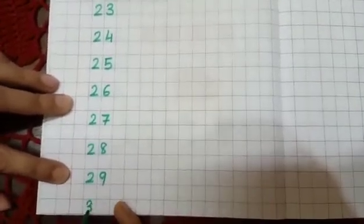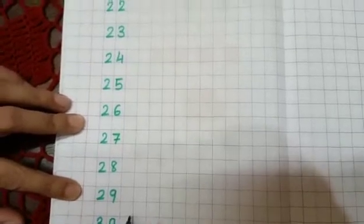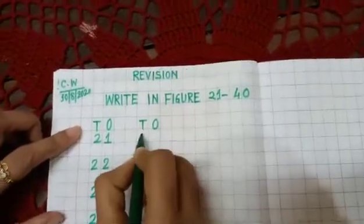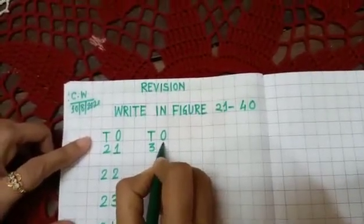2, 9, 29, 3, 0, 30. Okay, now here you leave two boxes and again write here 3, 1, 31.